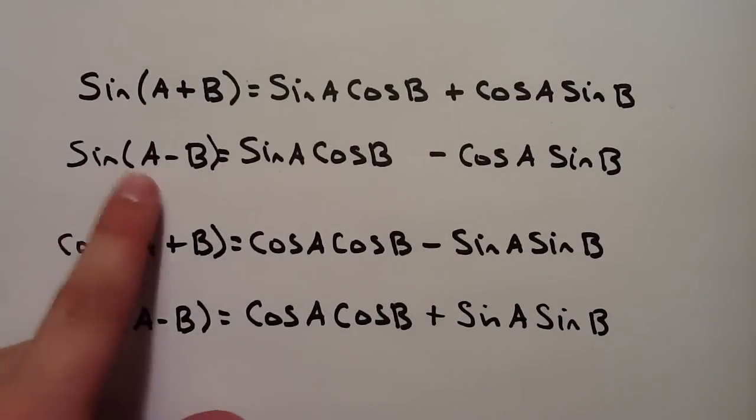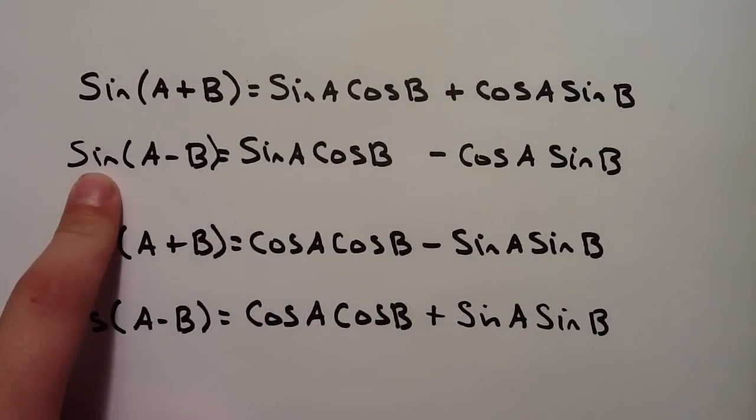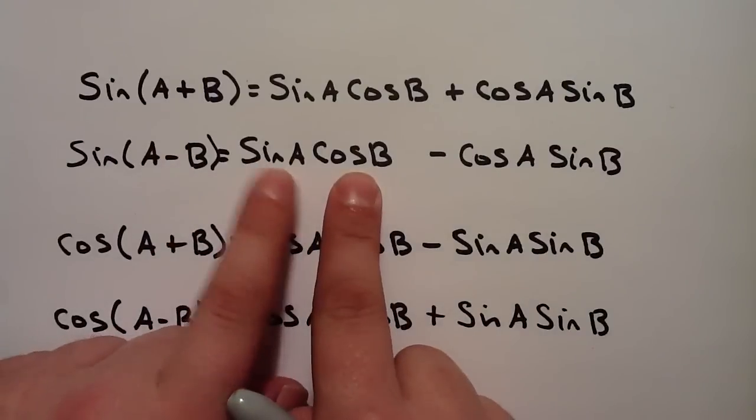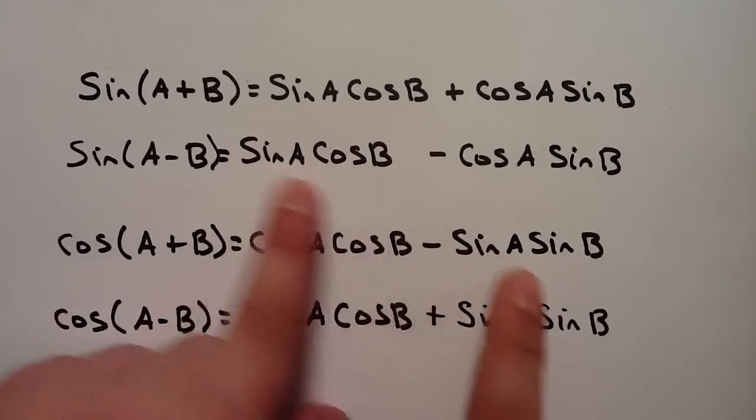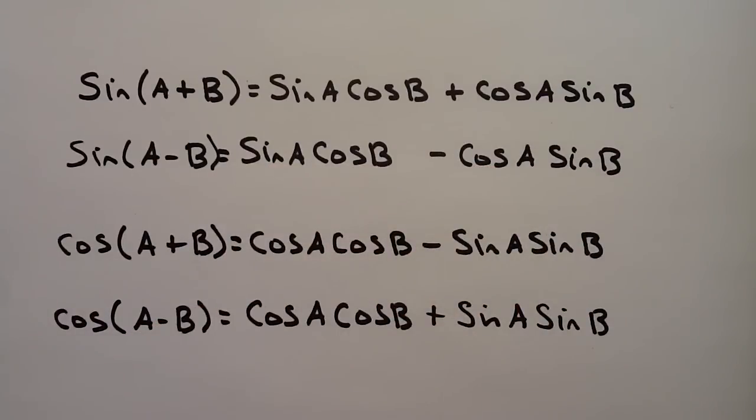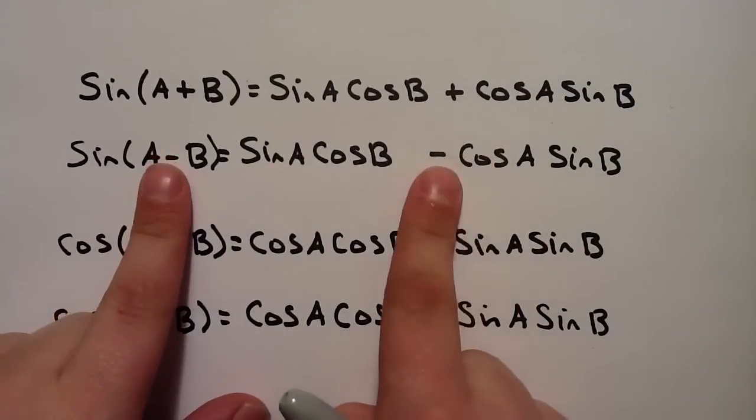Again, with the sine a minus b, again, sine is social. So he's hanging out with cosine. Sine a, cosine b. Cosine a, sine b. Again, sine, keep sine. Minus, minus.